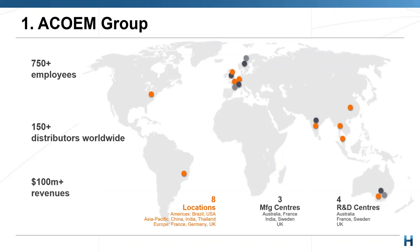Good afternoon everyone. Thank you for this opportunity to speak to you. Just to quickly highlight the company: the ACOEM group is a French-based international company. They acquired Ecodec, which has been in Australia for more than 50 years, and we now serve under their banner. Looking at the world map, there are now more than 750 employees and 150 distributors worldwide.